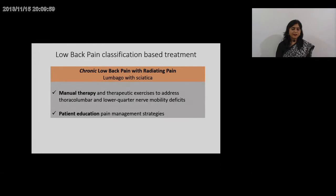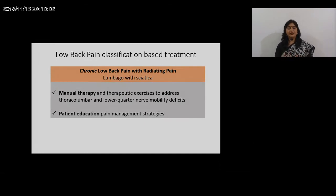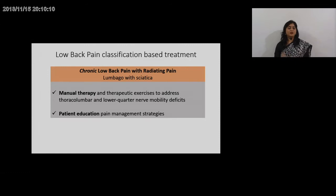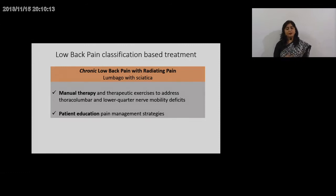In the chronic phase, for patients with radiating pain, manual therapy and exercises address thoracolumbar and lower quarter nerve mobility deficits. End-range nerve stretching may be given to the patient, along with pain education and pain management strategies.